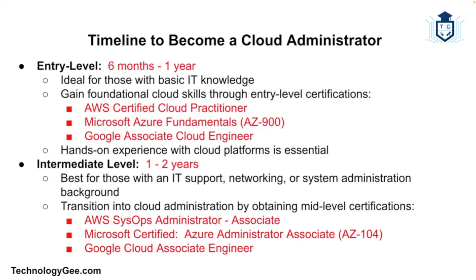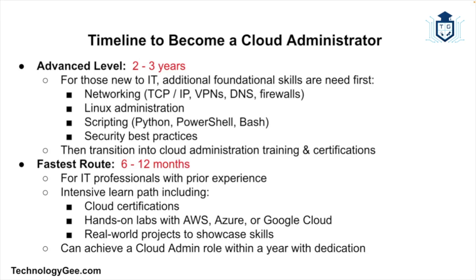At the intermediate level, which could take one to two years, those coming from an IT support, networking, or system administration background can transition into a cloud admin role by obtaining certifications like AWS SysOps Administrator Associate or Microsoft Certified Azure Administrator Associate, which can take about a year to complete. At the advanced level, it can take two to three years. For those new to IT, it may take longer to build foundational skills in networking, Linux, scripting, and security before diving into cloud administration. If you have IT experience and dedicate time to certifications, hands-on labs, and real-world projects, you can become a cloud administrator in about six to twelve months.